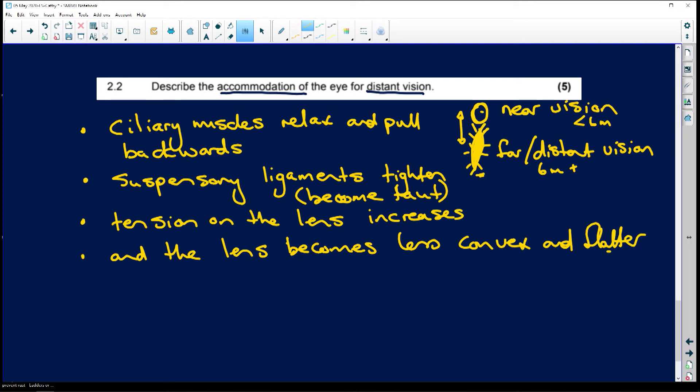Now when that happens, light rays are therefore less refracted - means bent - and are focused.